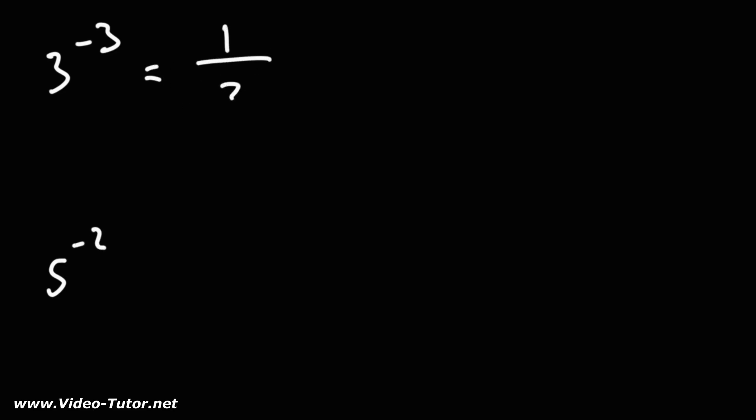So we can write this as 1 over 3 to the positive 3. And 3 cubed is 3 times 3 times 3. 3 times 3 is 9. Times another 3, that's 27. So the answer is going to be 1 over 27.